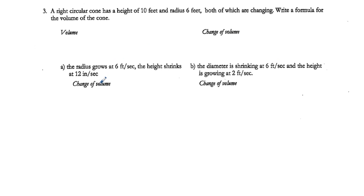Problem 3: a right circular cone with a height of 10 feet and a radius of 6 feet, both of which are changing. Write a formula for the volume of the cone. The volume formula is V = (1/3)πr²h.